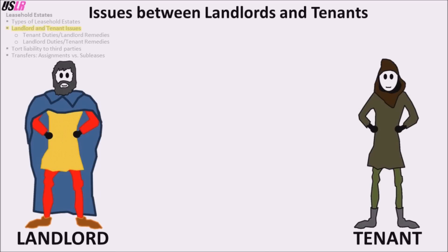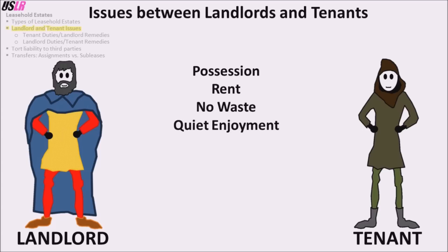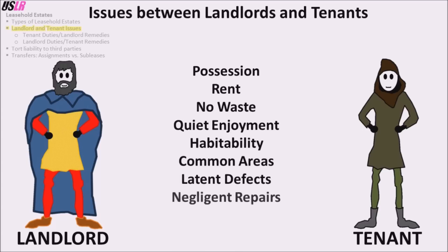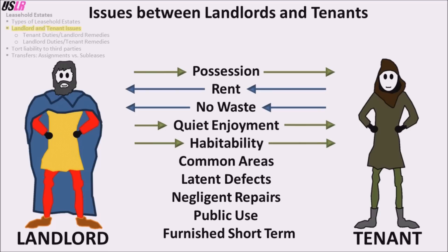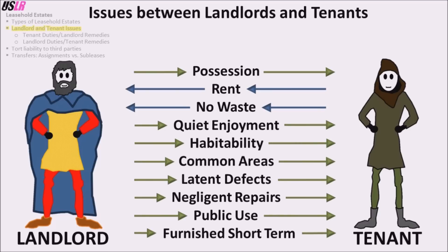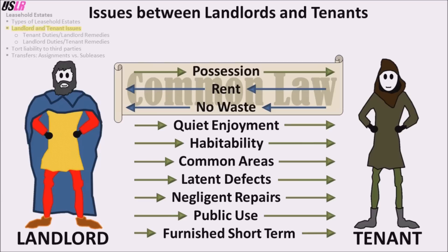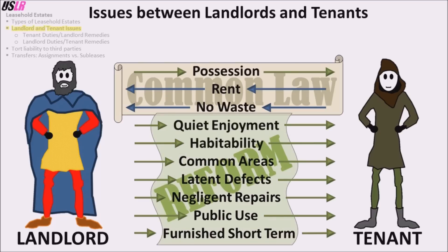Landlord and tenant law deals with issues that are easy to relate to. The ten issues are: possession, paying rent, no waste, quiet enjoyment, habitability, common areas, latent defects, negligent repairs, public use, and properties which are furnished and short-term. The landlord must put the tenant in possession; in exchange, the tenant must pay rent. The tenant must not commit waste, but is entitled to quiet enjoyment of a habitable property. It may be easier to remember these ten issues in three sets: the first three are originals from common law, quiet enjoyment and habitability are the most popular reform issues, and the final five are a miscellaneous bunch.